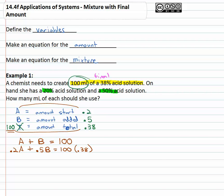And now we have something that we can solve. Let's get rid of the A's by multiplying both sides by negative point two. When we do this,